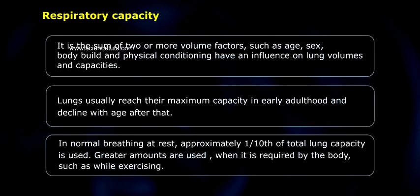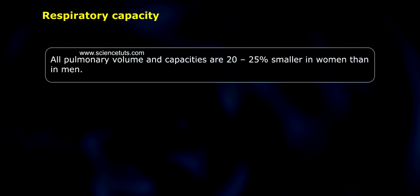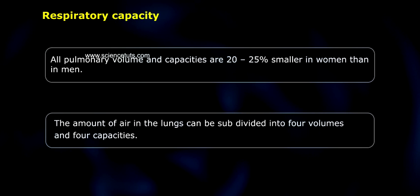In normal breathing at rest, approximately one tenth of total lung capacity is used. Greater amounts are used when required by the body, such as while exercising. All pulmonary volumes and capacities are 20 to 25% smaller in women than in men. The amount of air in the lungs can be subdivided into four volumes and four capacities.